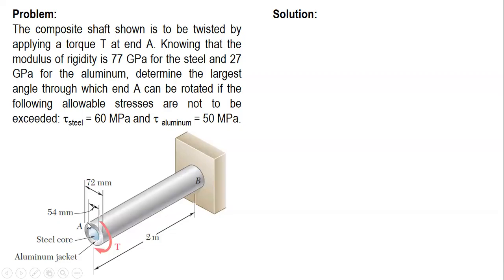Aluminum is a hollow shaft, so we use the formula for a hollow shaft. And then, after solving for the torque, we use the value to determine the angle of twist. From there, we compare the two values of angle of twist and determine the largest safe value.